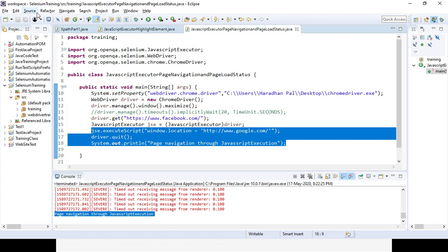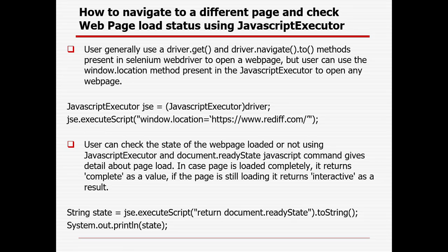Let's comment that out. The next thing I will discuss in today's session is how we can check the ready state for a particular web page — whether it is fully loaded or not. A user can check the state of the web page using JavaScript executor and document.readyState. This JavaScript command gives details about the page load. If the page is loaded completely, it returns 'complete' as a value. If the page is still loading, it returns 'interactive' as a result.